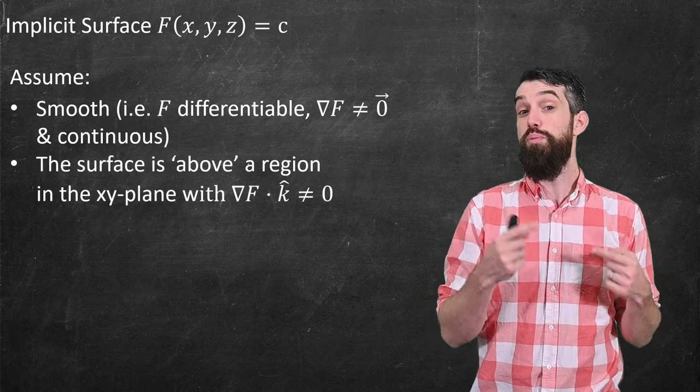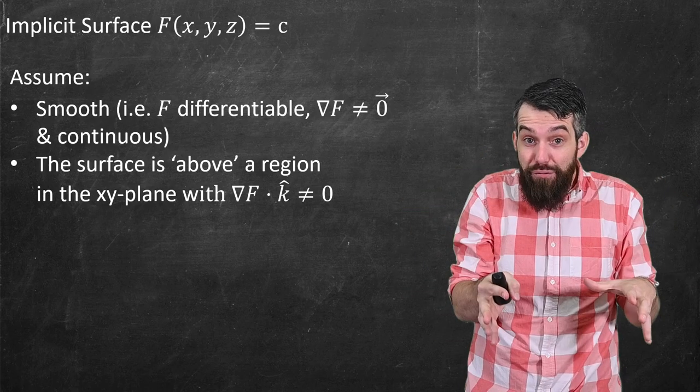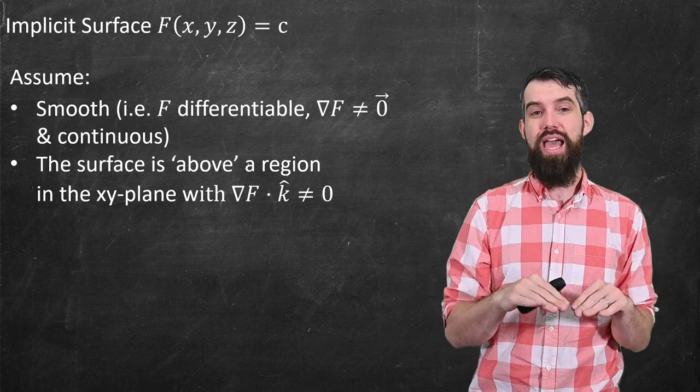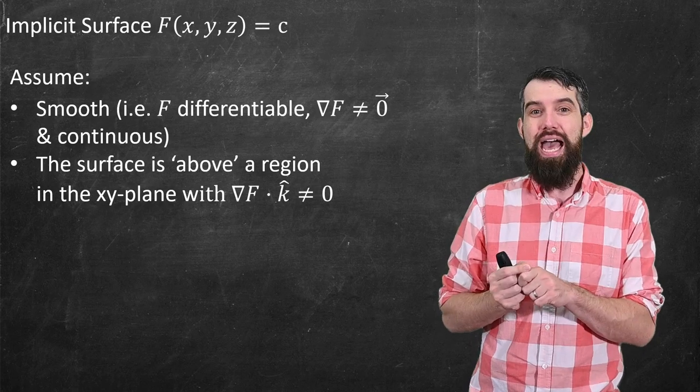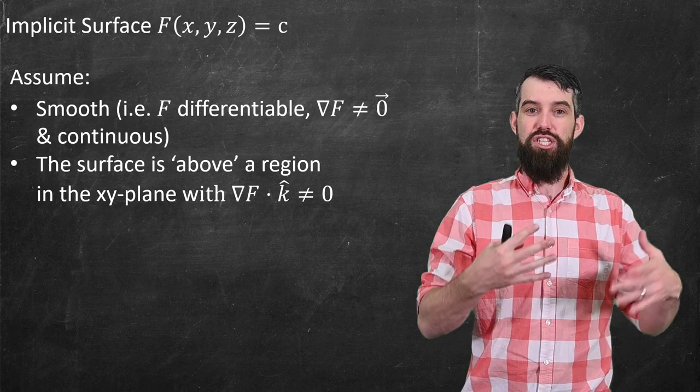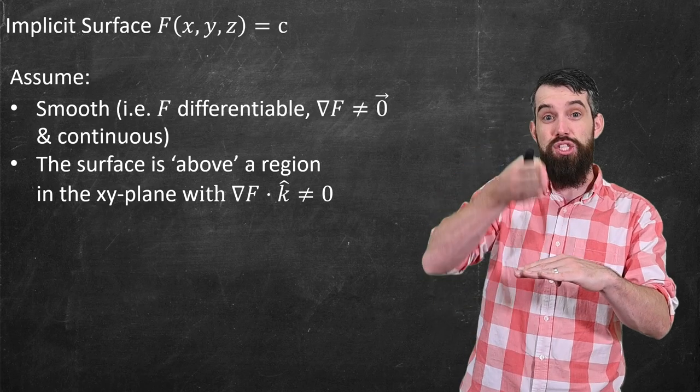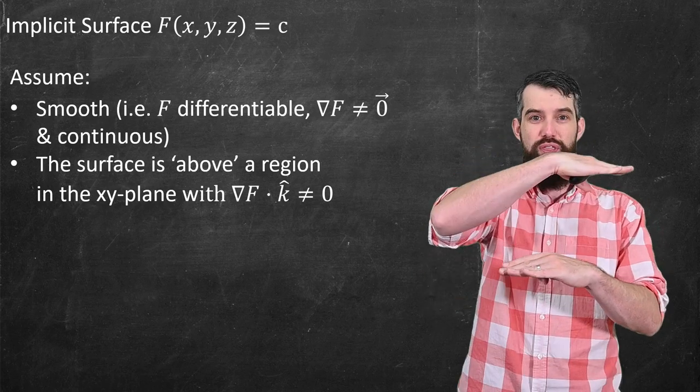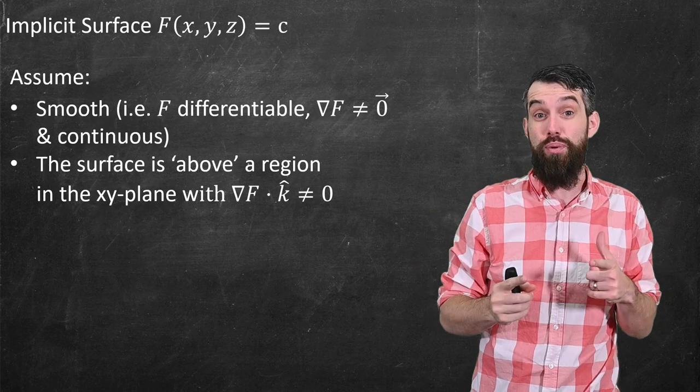And then secondly it was what we talked about previously. I want to think about this surface as being above a particular region down in the xy plane. And what I mean in that sense is that the gradient vector dotted with k hat is non-zero. So this is just to exclude the possibility that you have your xy plane down here and say for example you had a straight vertical surface where the gradient vector would be parallel to the original surface. It would have this dot product of zero.